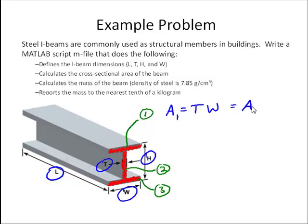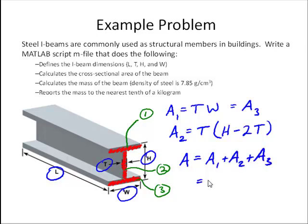And so we know that the area of rectangle 1 is just the thickness T times the width W, and that's going to be the same as the area of rectangle 3. And the area of rectangle 2 is again going to be the thickness times the height there, minus twice the thickness. So the total area of the cross-section is going to be A1 plus A2 plus A3 or 2 times A1 plus A2. Now the volume of the beam would just be the cross-sectional area times the length. And then the mass of the beam would just be the volume times the density.